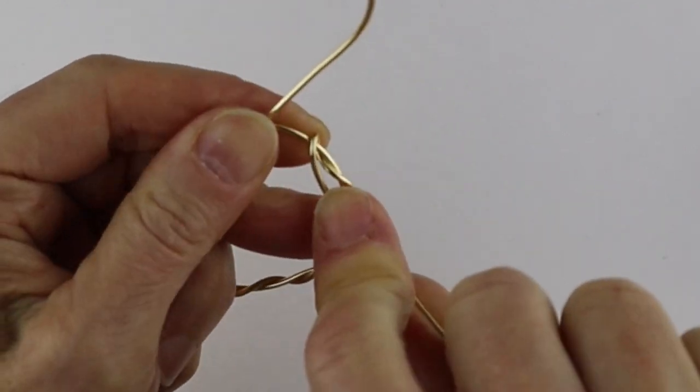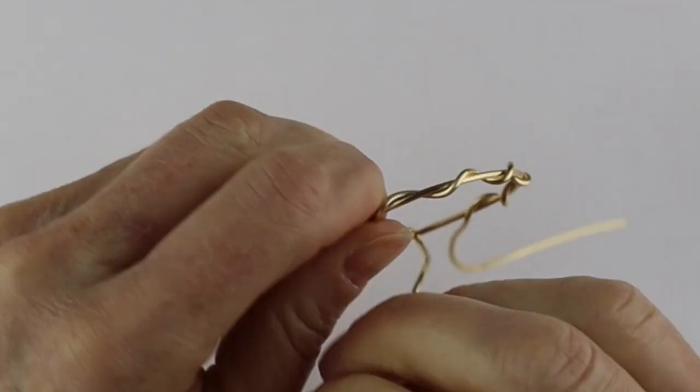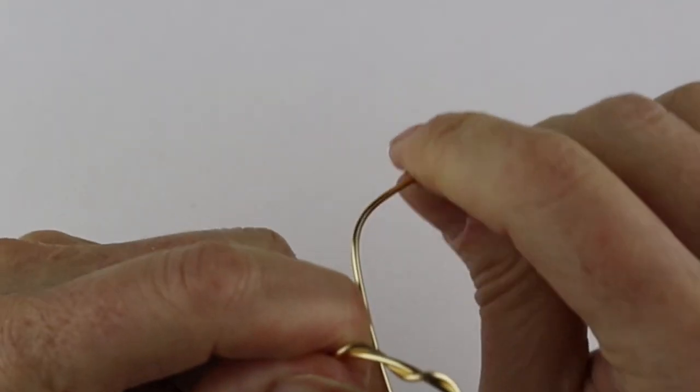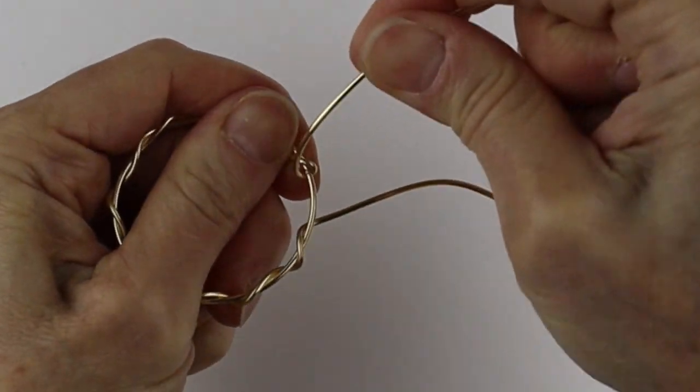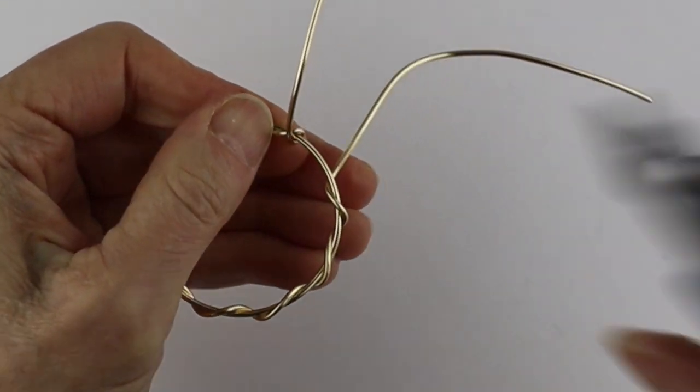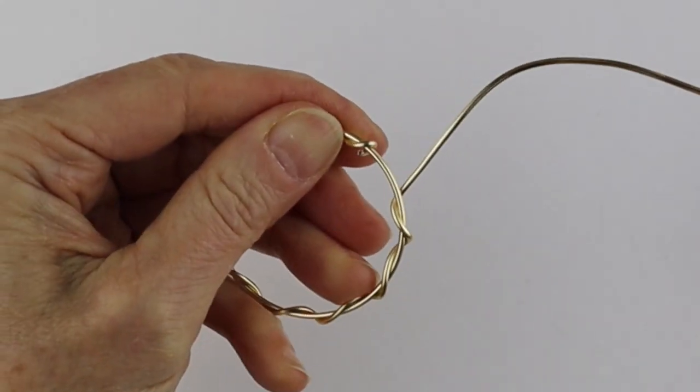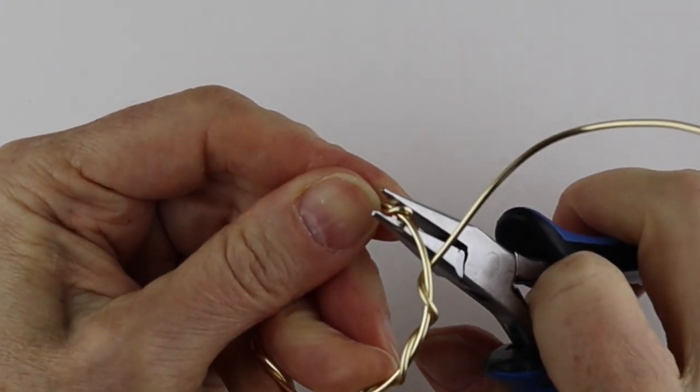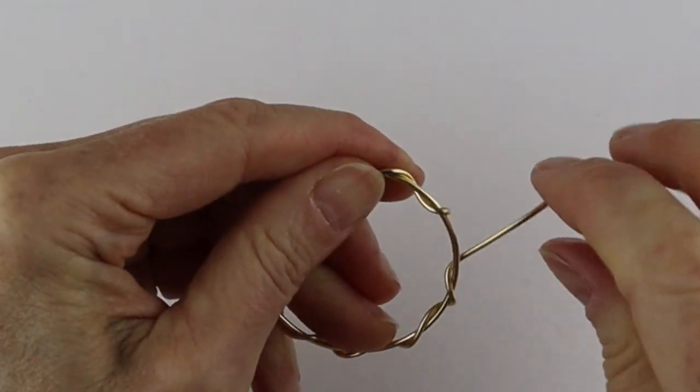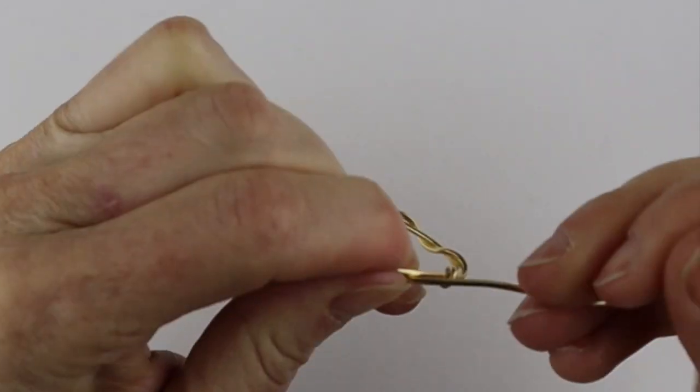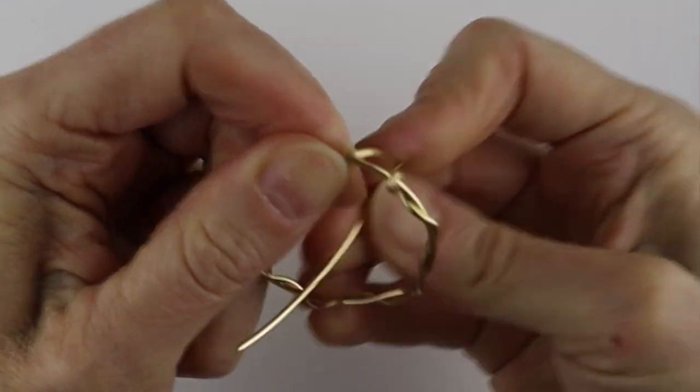When you get towards one end, just bring this around and cut it flush. Bring it all the way around in here, cut it, and make sure it's flush because you don't want it scratching or getting tangled up in the wool. Make sure it's not scratchy.